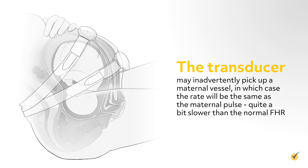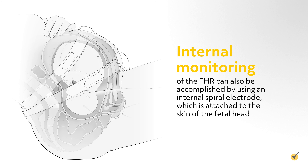During labor, it is important to assess the fetal heart rate to evaluate the fetal oxygenation status. A fetoscope can be used to auscultate the fetal heart rate between, during, and immediately after uterine contractions. Fetal heart rate is heard most clearly at the fetal back, so it is helpful to determine the fetal lie, or the baby's position, and the fetal presentation to easily find the fetal heart rate.